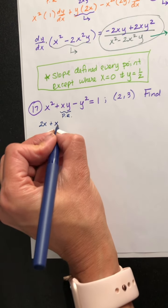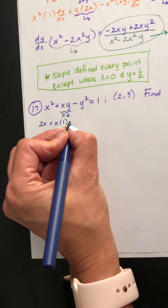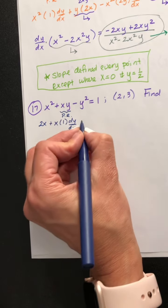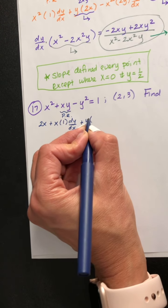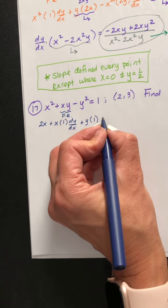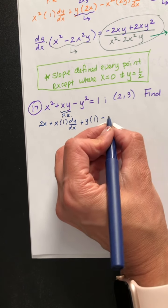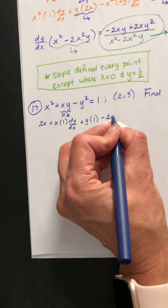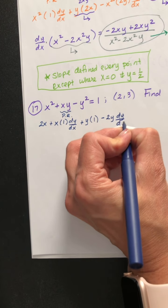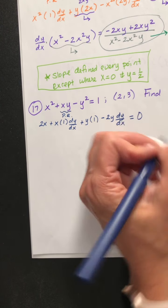That's the first term times the derivative of the second — it was a y, so dy dx — plus the second times the derivative of the first. The derivative of x is 1. Minus: the derivative of y squared would be 2y, but because it's a y, dy dx. And the derivative of 1 is 0.